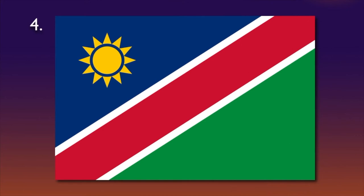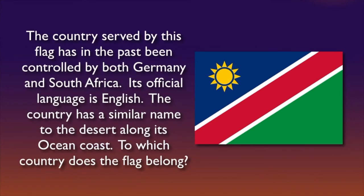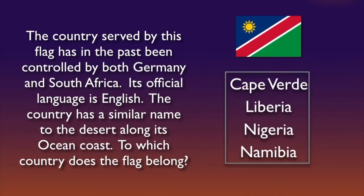Question four. A flag. The country served by this flag has in the past been controlled by both Germany and South Africa. Its official language is English. The country has a similar name to the desert along its ocean coast. To which country does the flag belong? There are your options.